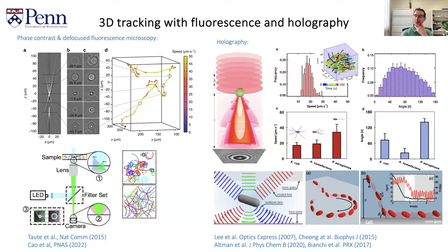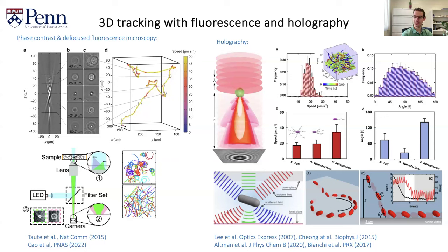The main way holography works is you have a laser beam that comes down through your sample and interacts with some particle — a bacterium or spherical colloid. This creates holograms, again rings, and from the shape of the rings you infer the three-dimensional position of your cells. This method has been very successful. People have used it to measure the speed of bacteria in three dimensions and the tumble angles of many different species.